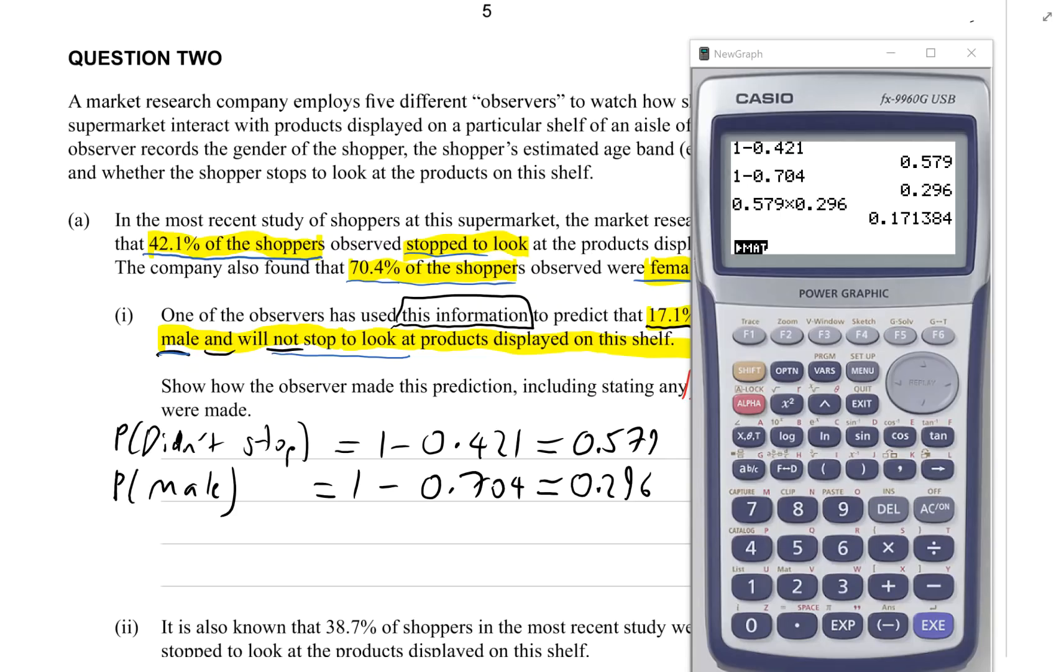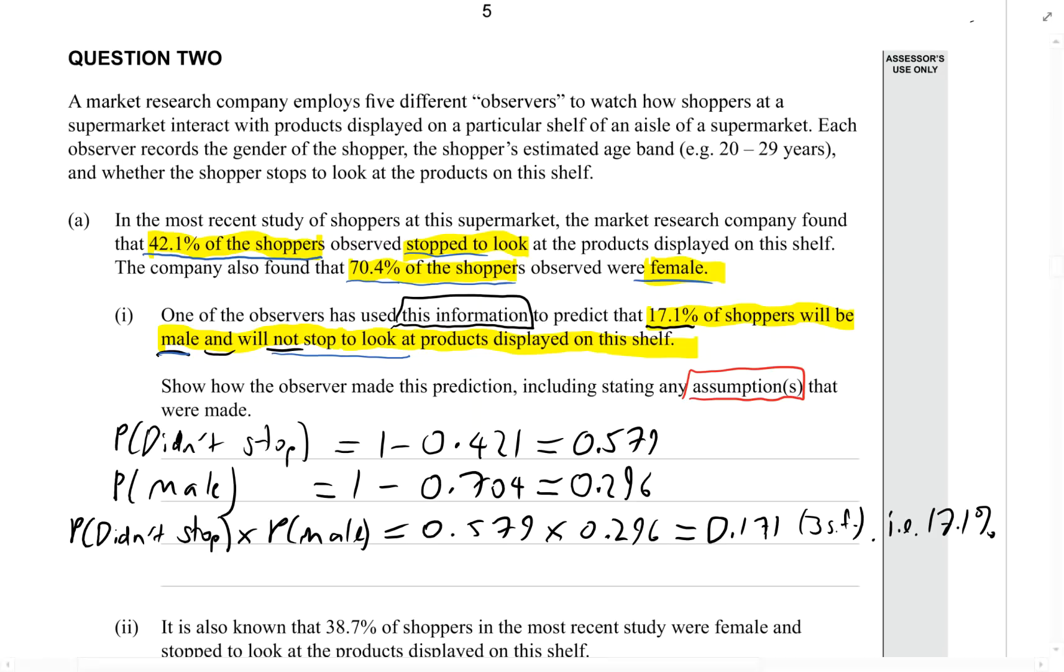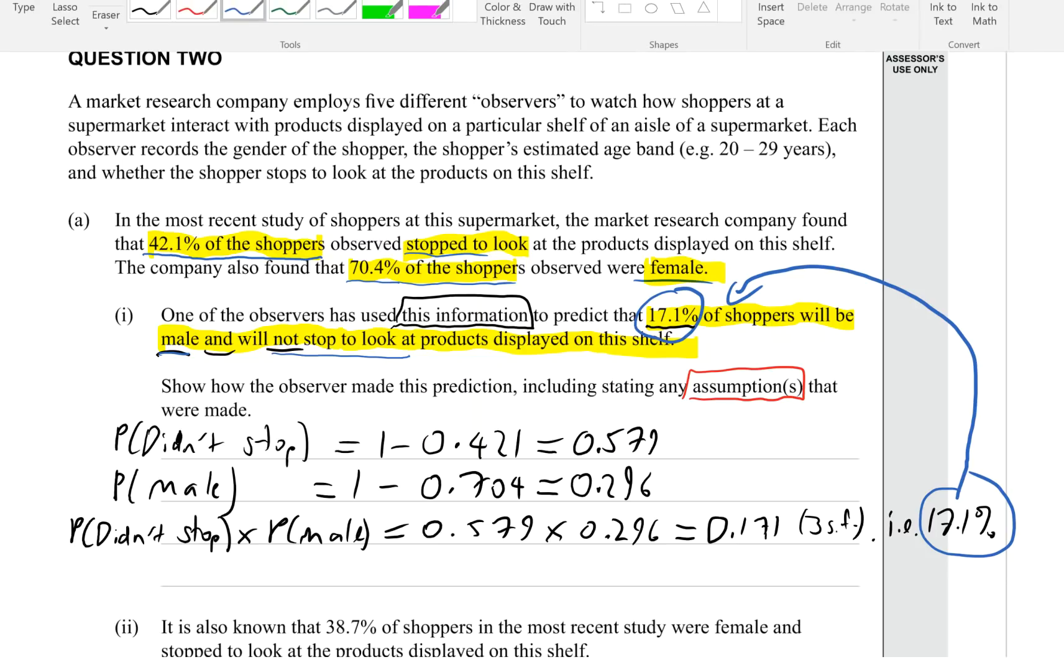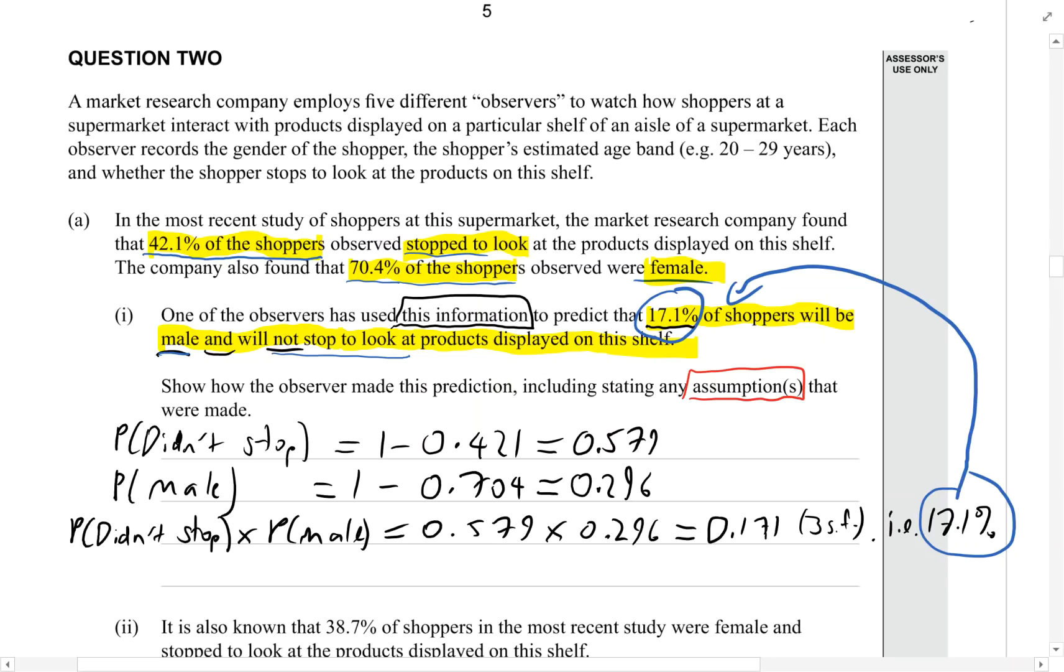We've shown how they worked it out. Now this assumes that the two events, not stopping and being male, are independent. In other words it's saying that gender is independent of whether they stopped or not.